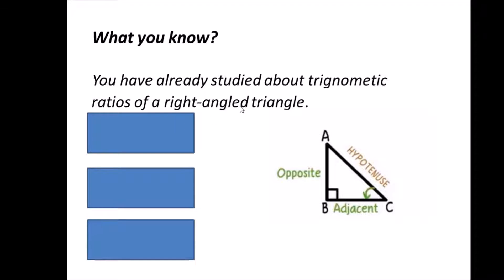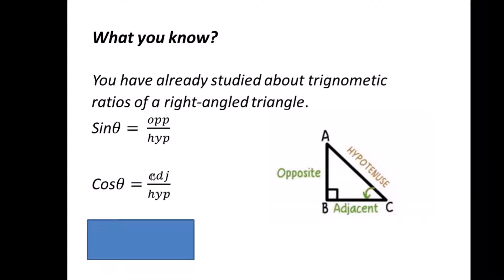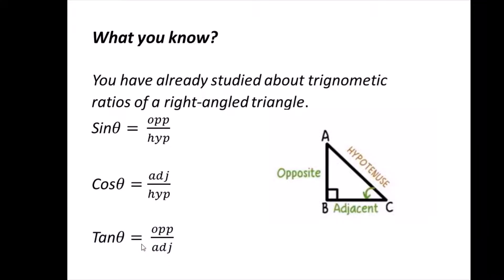You have already studied the trigonometric ratios of a right angle triangle. Here is a right angle triangle. The side opposite the right angle is always the hypotenuse. If we are using a given angle, then the side opposite that angle is the opposite side, and the remaining side is the adjacent side. The trigonometric ratios are: sine theta equals opposite over hypotenuse, cos theta equals adjacent over hypotenuse, and tan theta equals opposite over adjacent.